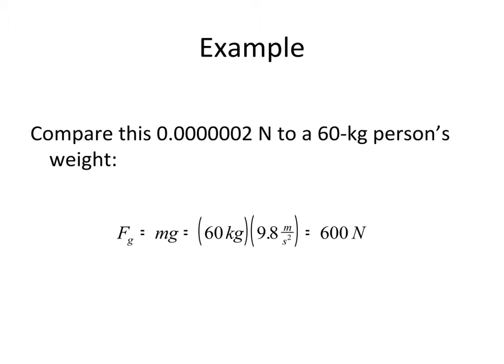So comparing this to a person's weight, that same person on the Earth, if we use our small g equation, we get the person's weight, that is the force of gravity between the person and the Earth is 600 Newtons, which is far greater than the force of gravity between the person and their neighbor. So the force of gravity is extremely weak especially between everyday objects like people.